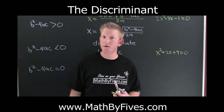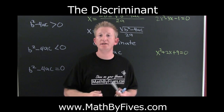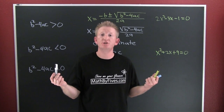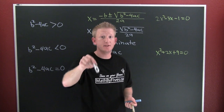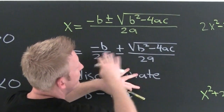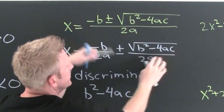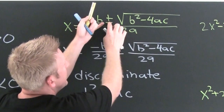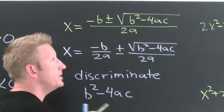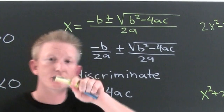Here we're trying to determine the number and types of solutions to a quadratic equation before we actually crunch the numbers. In order to do that, we want to check the discriminant. I have the quadratic formula rewritten in a form that's going to help us determine the number and types of solutions. The discriminant is part of the quadratic formula — it's the part under the root.